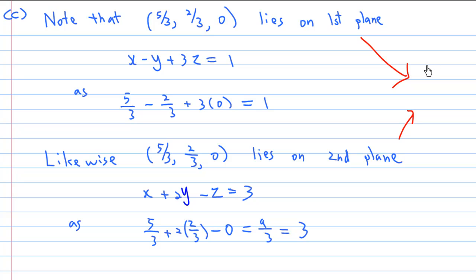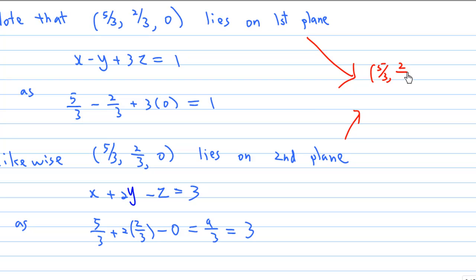From these two calculations we know that (5/3, 2/3, 0) lies on the intersection of two planes.